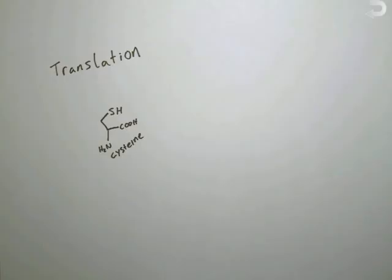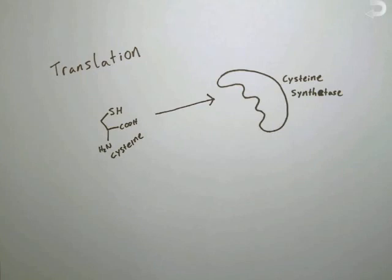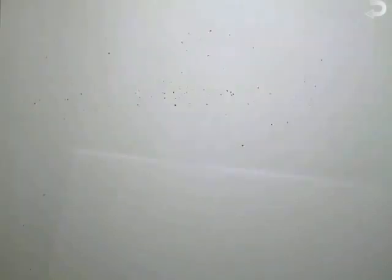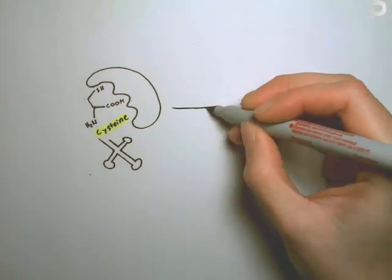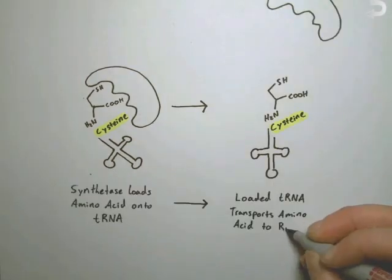Basically there are a bunch of amino acids floating freely around a cell and each of the 20 amino acids has a corresponding synthetase and tRNA also in the cell. The synthetase, amino acid, and tRNA all come together and the amino acid is chemically loaded onto the tRNA by the synthetase.